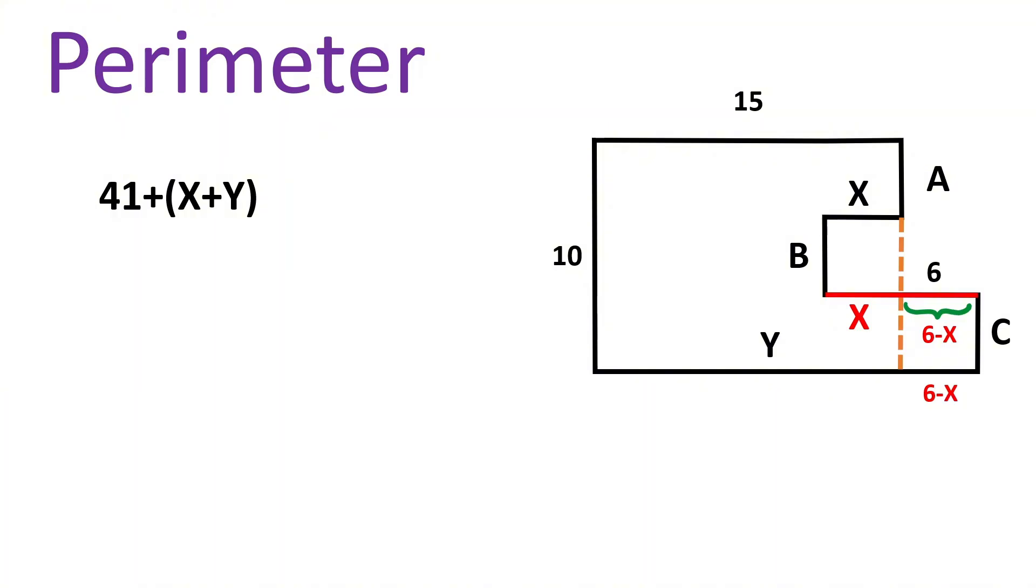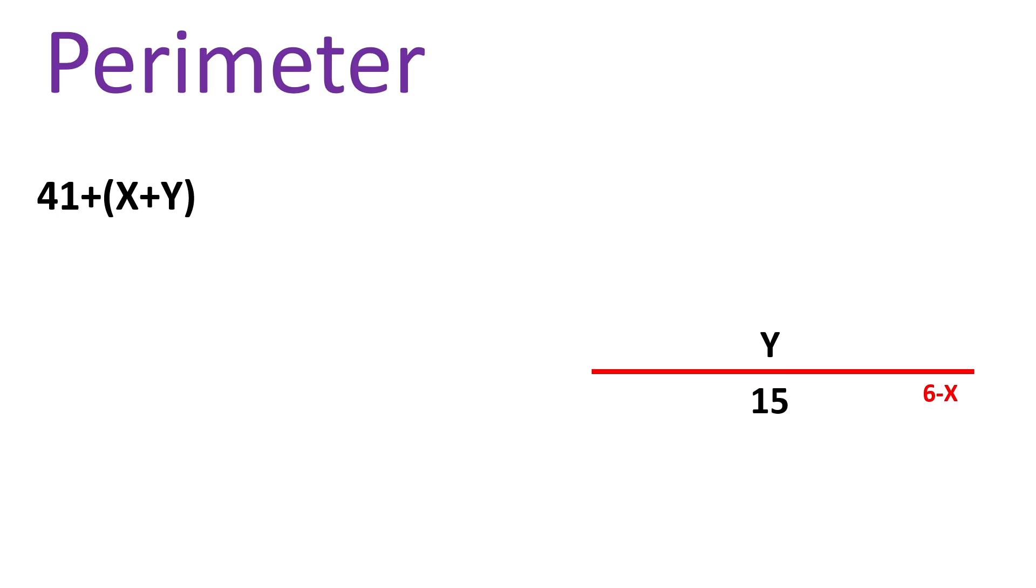And since this length is 6, so this length will be 6 minus X. Therefore, this side length will also be equal to 6 minus X. Now this side has a length of 15 units, so this will also be equal to 15.